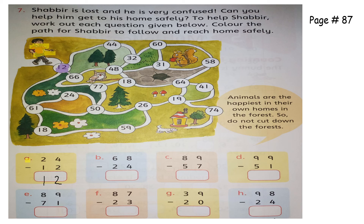Second question: 8 minus 4 is 4, and 6 minus 2 is 4 — so where is 44? Here — Shabir will come to this path. Next: 9 minus 7 is 2, and 8 minus 5 is 3 — where is 32? Here — Shabir will follow this path. Next: 9 minus 1 is 8, and 9 minus 5 is 4 — where is 48? Here.